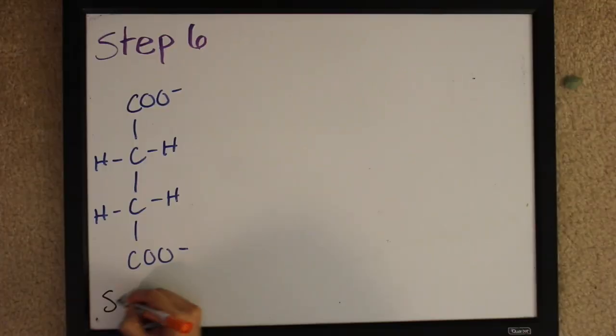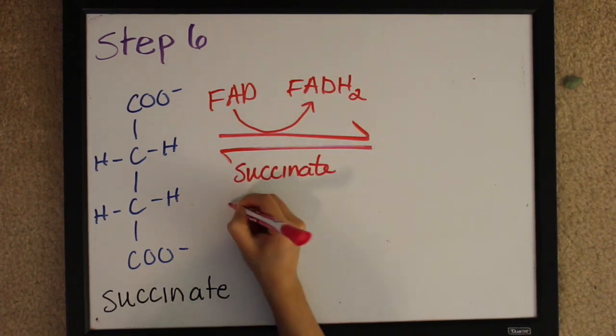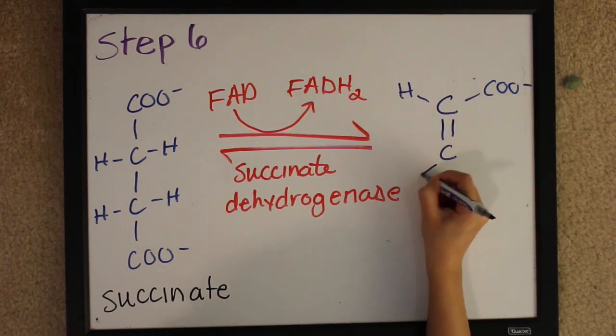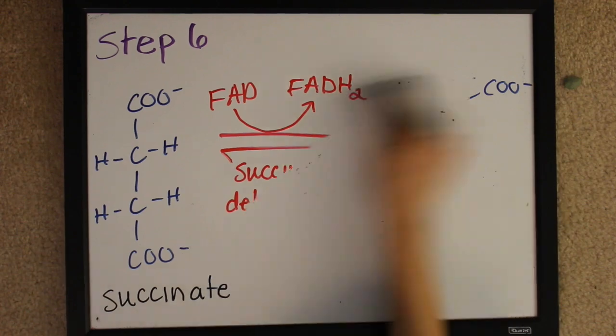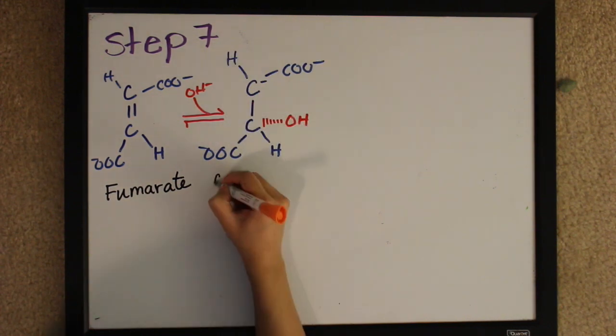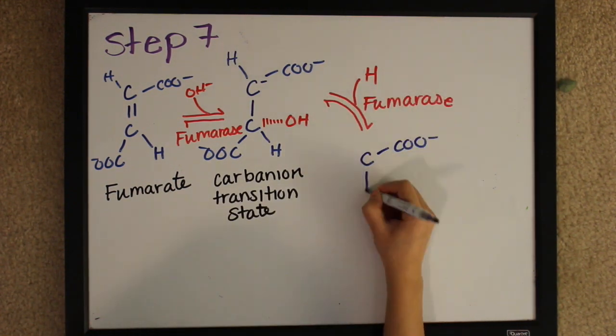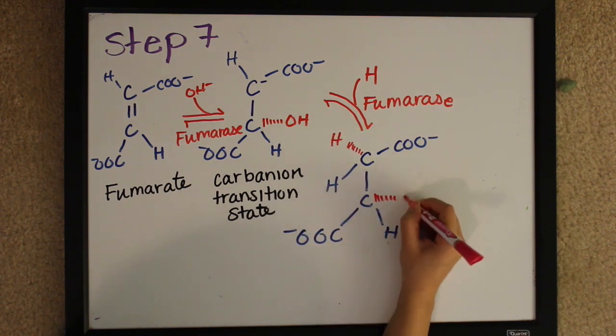We're in the home stretch. Step six starts with succinate as well as FAD and succinate dehydrogenase, which will eventually give fumarate. Step seven is very important for the disease we're going to talk about. We start with fumarate, add OH in an intermediate step, then use the enzyme fumarase to finally give us L-malate.